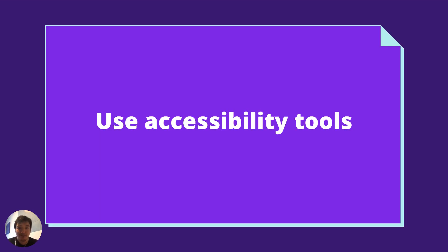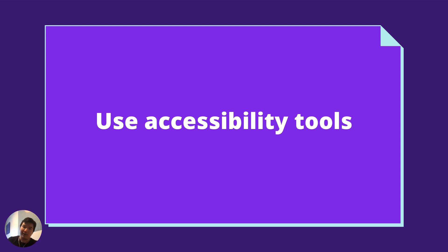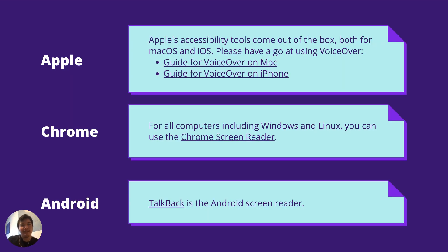The first recommendation is to use accessibility tools. This makes a big difference for understanding how to create good labels and avoid duplication. For example, you want to make sure your label doesn't conflict with your placeholder and doesn't say 'it's a button' or anything redundant. Using accessibility tools will show you that more clearly. There are some paid tools I didn't include on this list — everything I'm listing here is free.